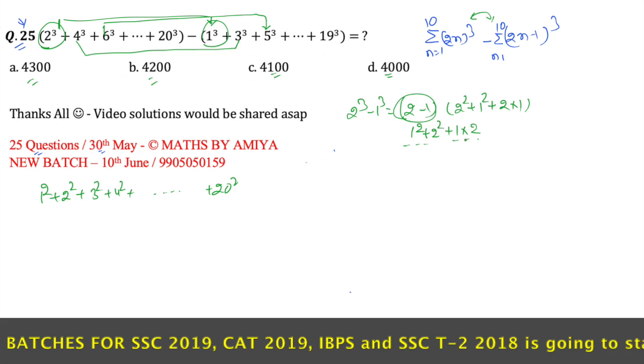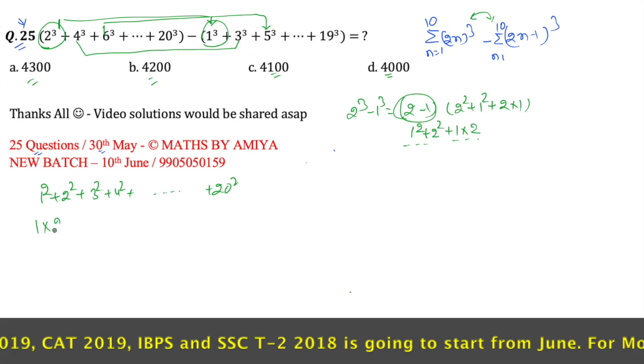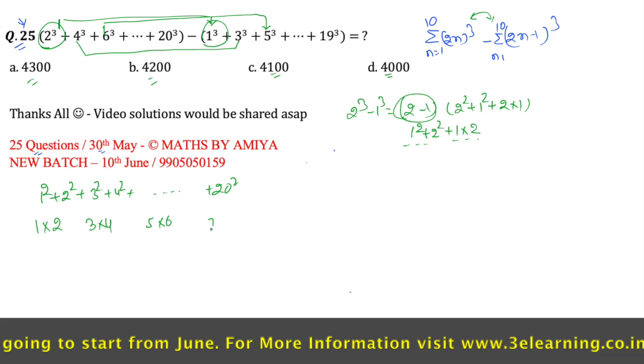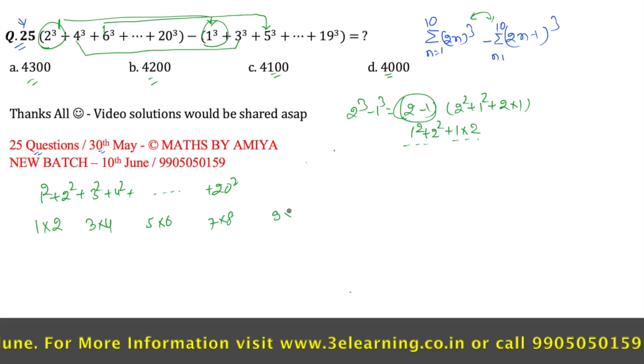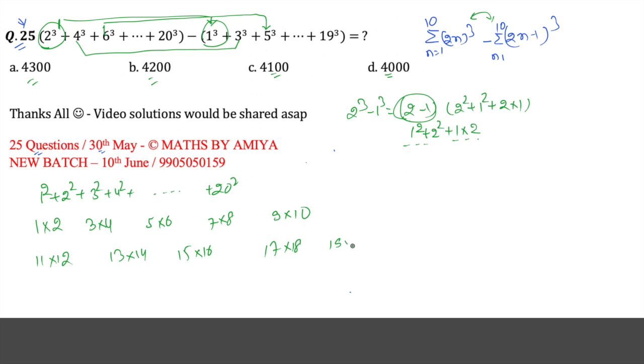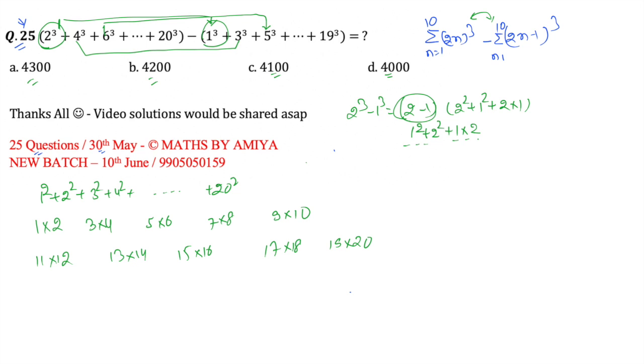This one is the first square terms. And second series is 1 into 2, 3 into 4, 5 into 6, 7 into 8, 9 into 10, 11 into 12, 13 into 14, 15 into 16, 17 into 18, 19 into 20. And we use the digital sum.